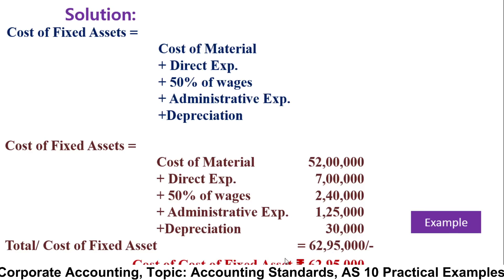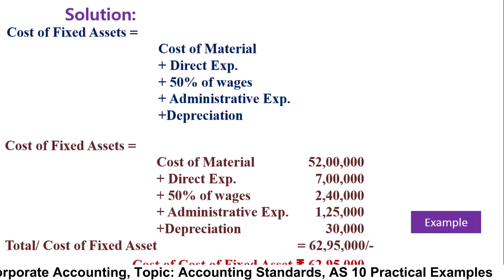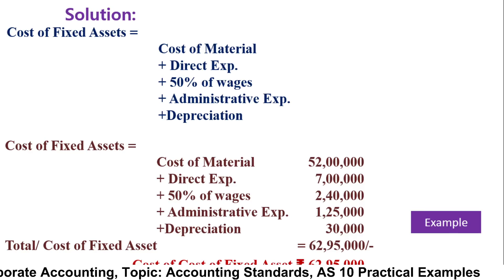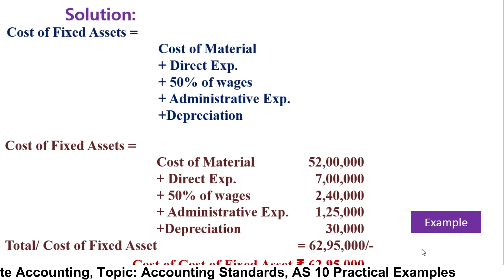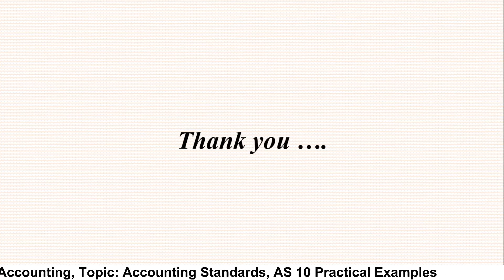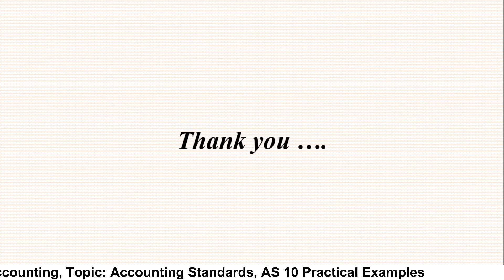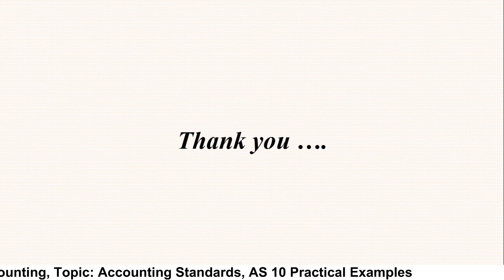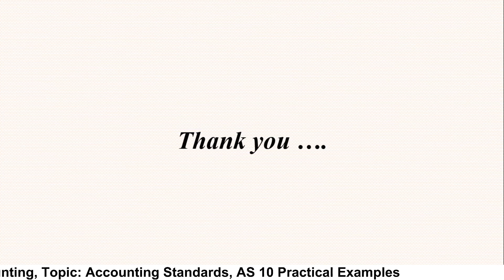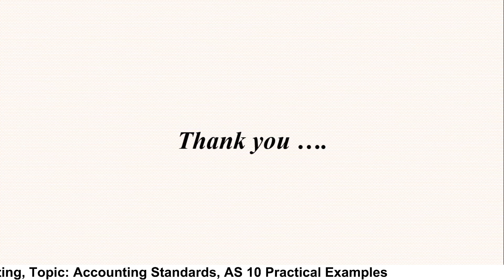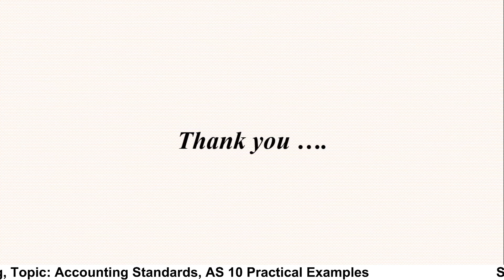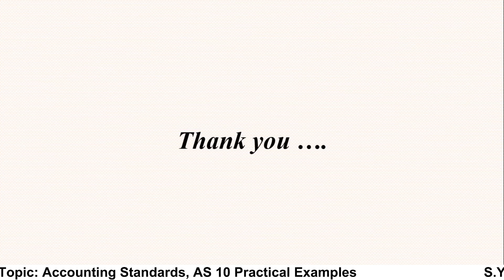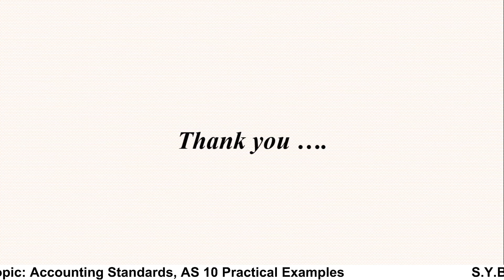So the cost of the asset comes to rupees 62 lakh 95,000. You have to show this cost in the books of account as the cost of fixed asset — rupees 62 lakh 95,000. In the next example, we will see how to calculate depreciation on fixed assets under Accounting Standard 10, that is PPE — Property, Plant and Equipment. Thank you very much.